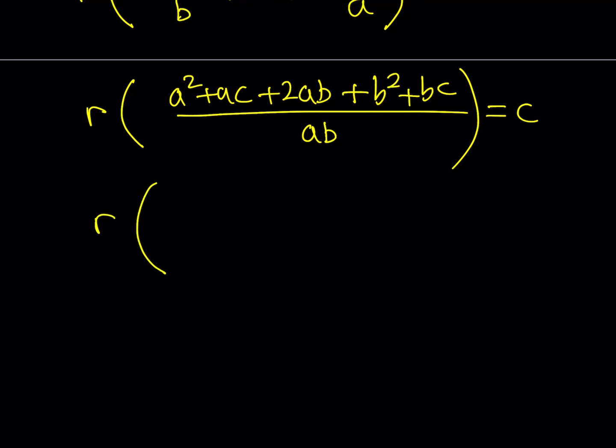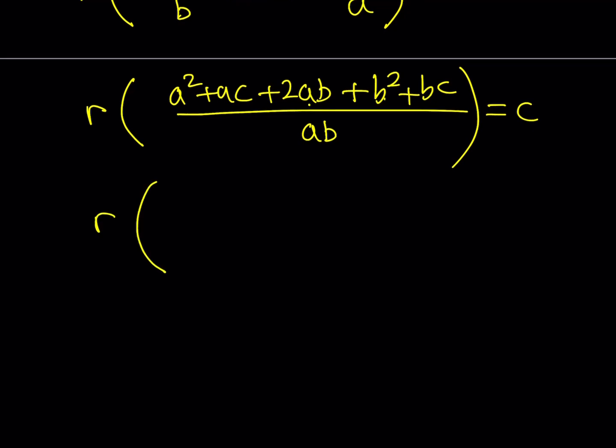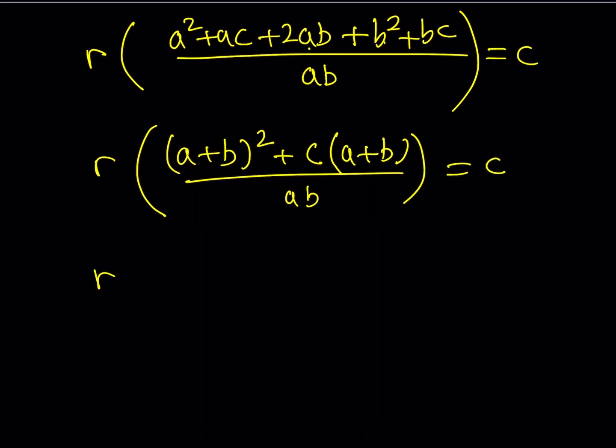So I have A squared plus 2AB plus B squared. You see that? That can be written as A plus B quantity squared. What do I have left? Well, I didn't use the AC and the BC, and that can be factored out. I can factor out the C, and that gives me C times the quantity A plus B over AB, and that's equal to C. See where I'm going with this? Now I can factor out the A plus B, and then that's going to give me A plus B plus C, and that is divided by AB and is equal to C.